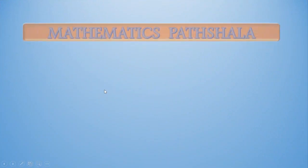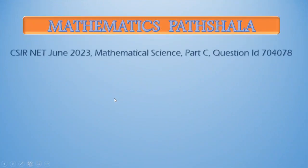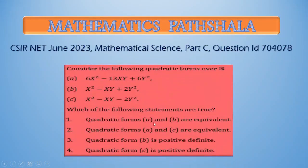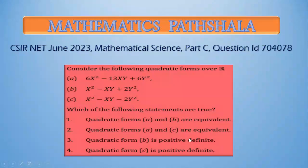So in our question: quadratic forms A and B are not equivalent because they do not have the same rank and same signature. But quadratic forms A and C have the same rank and same signature, so they are equivalent. Therefore option 2 — that quadratic forms A and C are equivalent — is true.